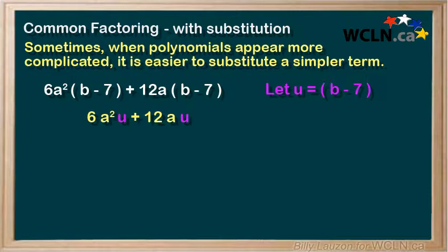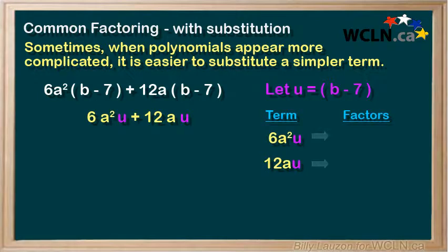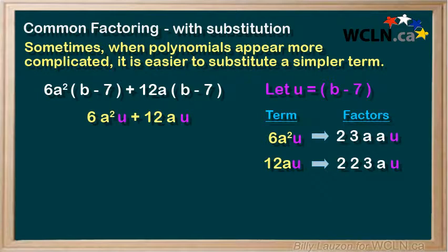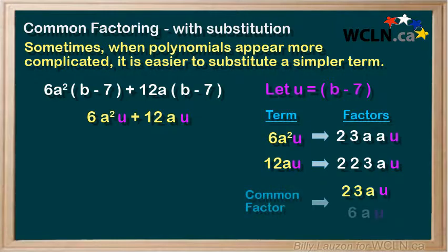This will give us 6a squared u plus 12au. Now let's take these two terms and break them apart into their factors. We will notice that each of them has a 2 in common, a 3 in common, the letter a, and our newly substituted letter u — resulting in a common factor of 6au.